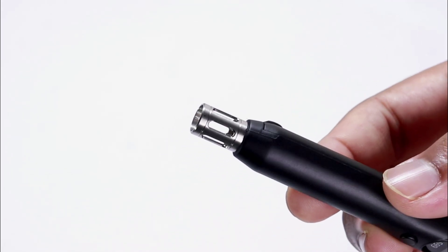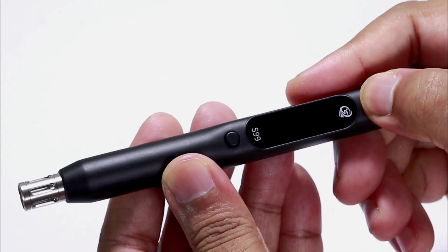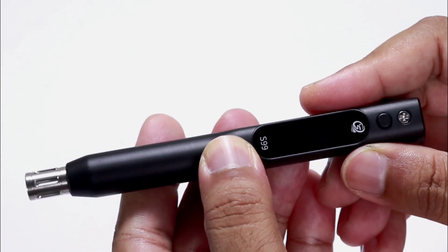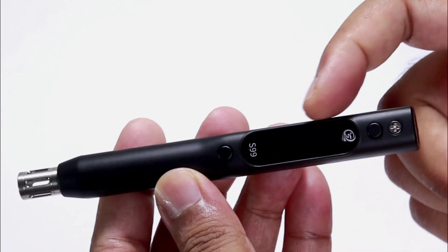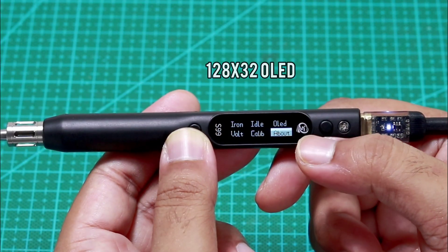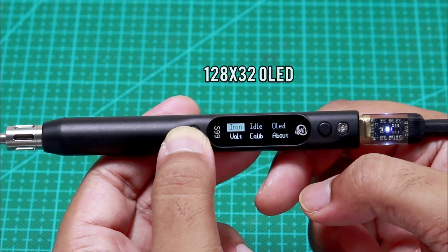The build quality of S99 is premium and compact as the soldering iron is intelligent having two buttons for the settings and navigation. As well as there is an OLED display of 128 by 32 pixels to show the values and menus.